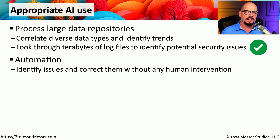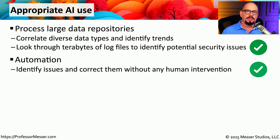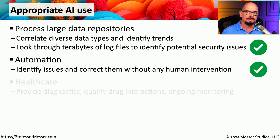We've also started integrating AI into our scripting and automation so that AI can make decisions on what to do when a certain situation occurs. Being able to do this without human intervention means that we can spend our time doing something else.